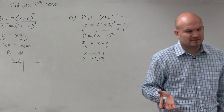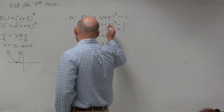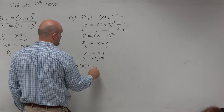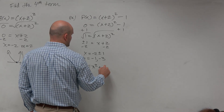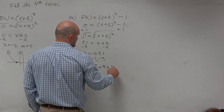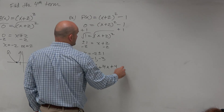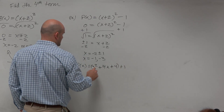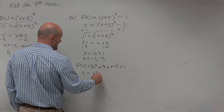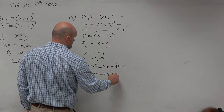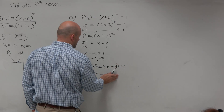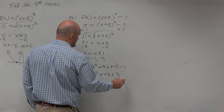That was the square root method. However, we could also expand this. We could multiply this out rather simply: x squared plus 2 times the first 2, so that's going to be 4x plus 4, and then plus 1. So replacing this as 0 and combining, we'd have x squared plus 4x plus — that's minus 1, so that'd be 3.